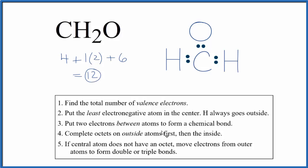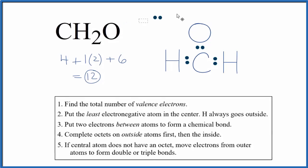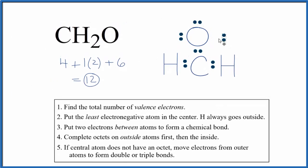Let's complete the octet on the outside atom, on the oxygen. So now the oxygen has an octet, and we're using two, four, six, eight, ten, twelve valence electrons.